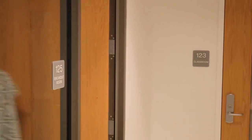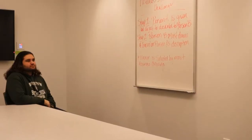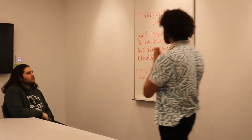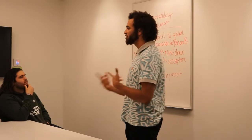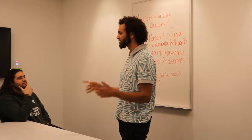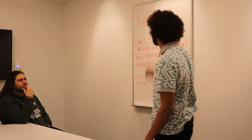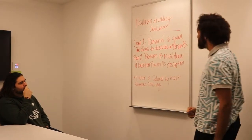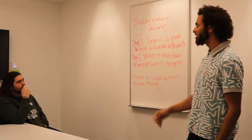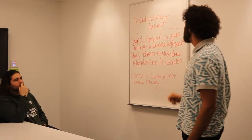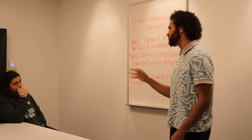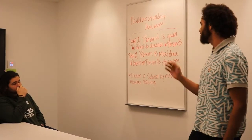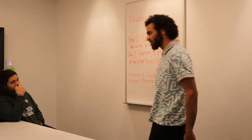All right, get in here! Welcome to challenge one — this is the misunderstanding challenge. This one is going to highlight some of the communication barriers you are going to face in the field. Step one: person A is going to be given an object to describe to person B. Then, step two, person B must draw the object based on the description person A gave. The winner will be selected by the most accurate drawing.